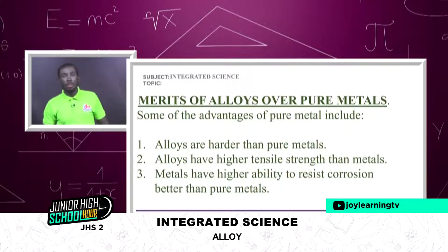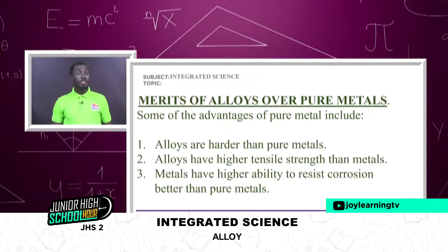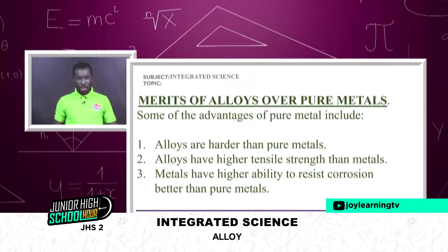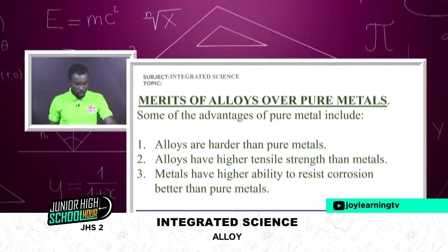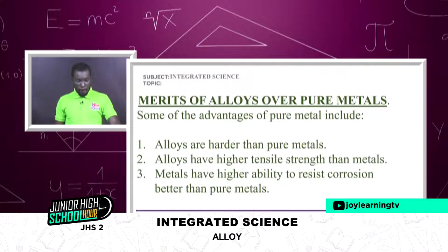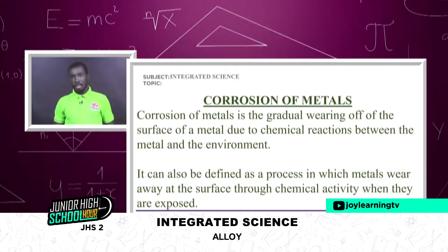Now let's look at the merits or advantages of alloys over pure metals. First, alloys are harder than pure metals — it's like two strengths being brought together as one. Second, alloys have higher tensile strength than pure metals. Third, alloys have a higher ability to resist corrosion better than pure metals.